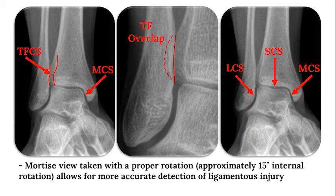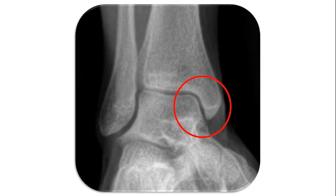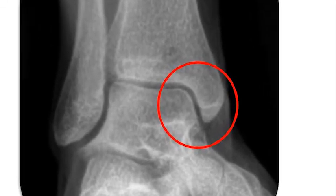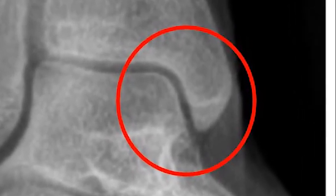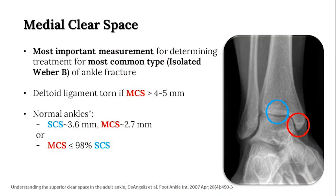These are three important radiographic parameters discussed later in this video. Over-rotation or insufficient rotation in obtaining the mortise x-ray can make comparison of the clear spaces difficult. The medial clear space is the radiographic clear space between the medial border of the talar body and the lateral edge of the medial malleolus, and is a proxy for the integrity of the deep deltoid ligament. If the deep deltoid ligament is injured, the medial clear space becomes wide under stress. A widening of four to five millimeters, or a medial clear space greater than the superior clear space, is typically thought to represent a deep deltoid ligament injury and an unstable mortise.